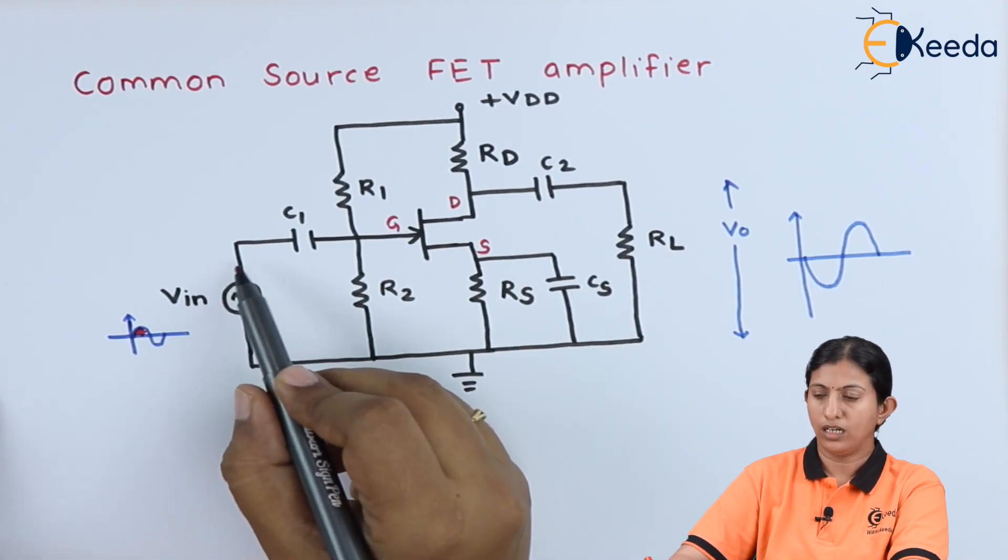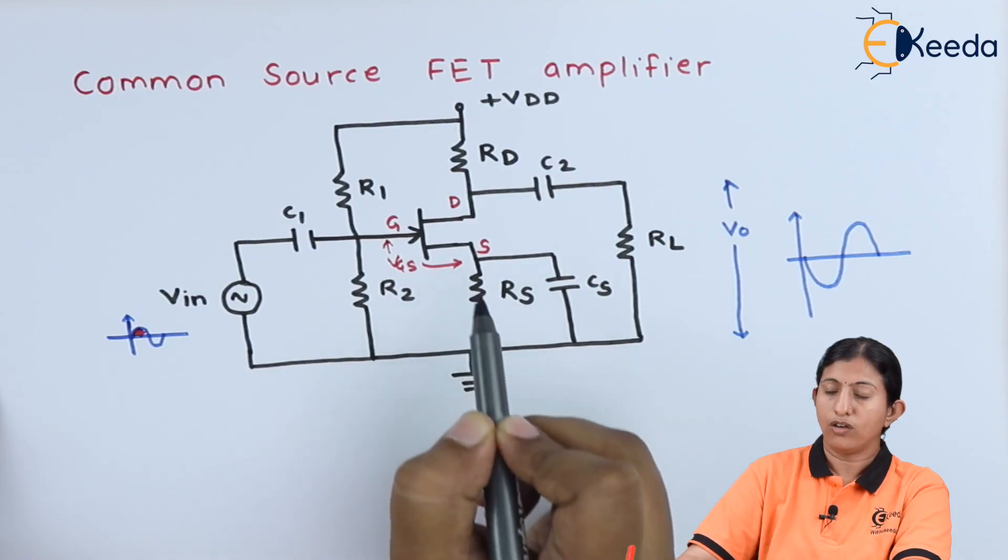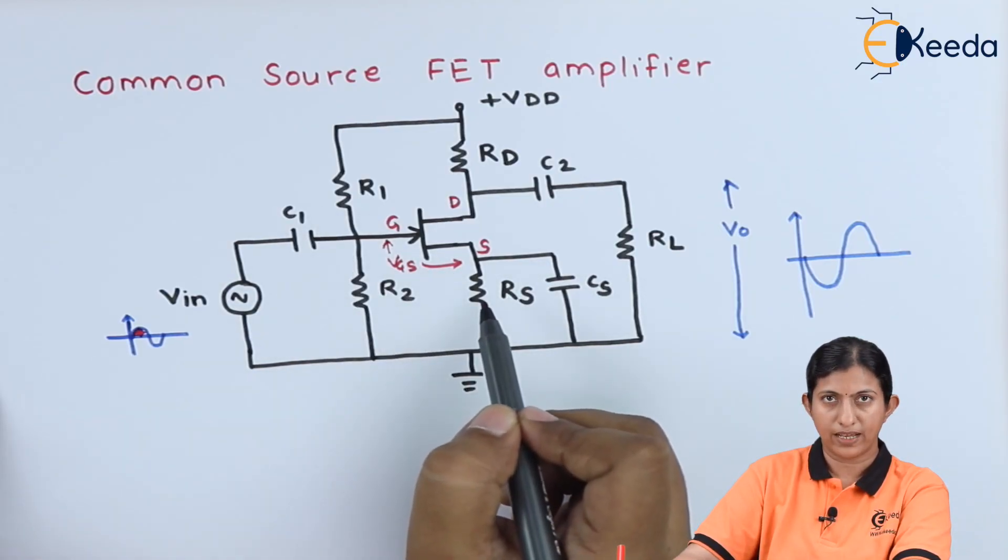We apply the input signal to the gate. This gate-to-source voltage is always reverse biased due to this voltage divider biasing.